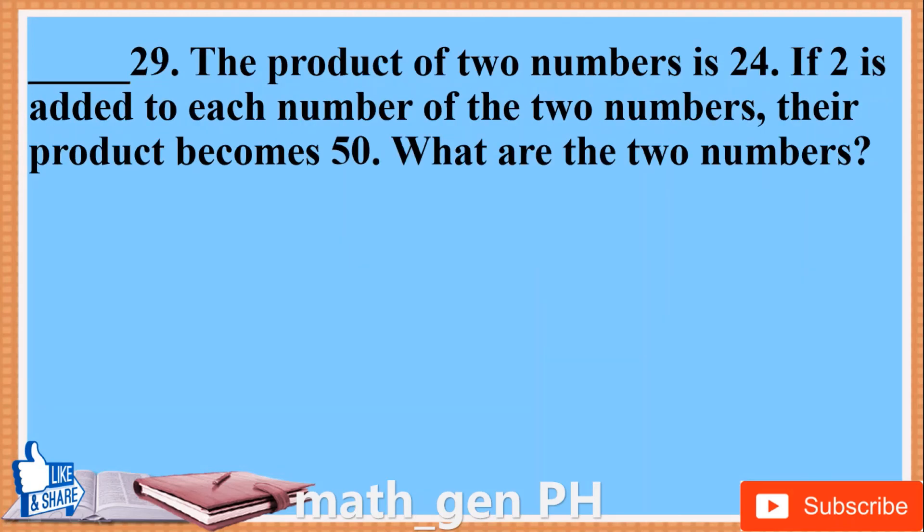Number 29. The product of two numbers is 24. If 2 is added to each of the two numbers, their product becomes 50. What are the two numbers?